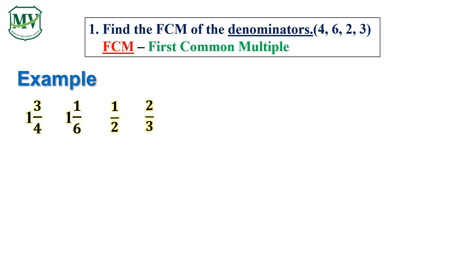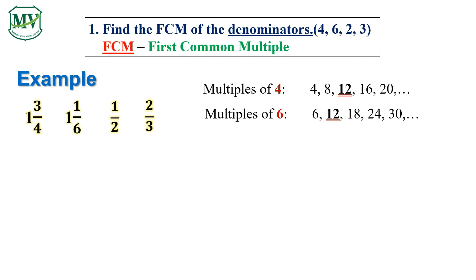The multiples of 4 are: 4, 8, 12, 16, 20, and so on. The multiples of 6 are: 6, 12, 18, 24, 30, and so on.